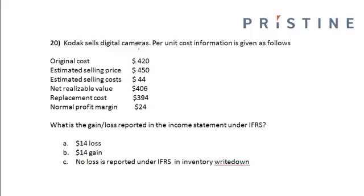Kodak sells a digital camera. The per unit cost information is given as follows: the original cost is $420, the estimated selling price is $450, the estimated selling cost is $44, the net realizable value is $406, the replacement cost is $394, and the normal profit margin is $24. What is the gain or loss reported in the income statement under IFRS?